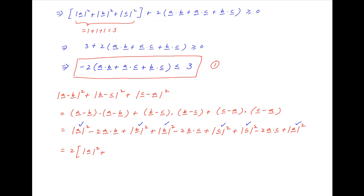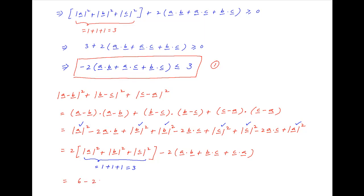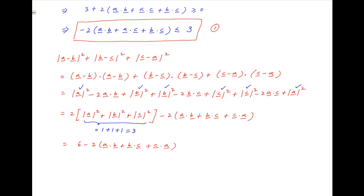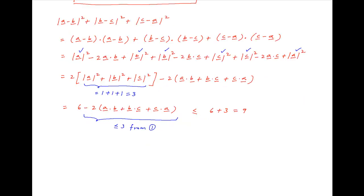This simplifies to 2(|a|² + |b|² + |c|²) − 2(a·b + b·c + c·a). The first bracketed expression equals 3, so the expression becomes 6 − 2(a·b + b·c + c·a). From Result 1, the second term is less than or equal to 3, so the given expression is less than or equal to 6 + 3, which equals 9.